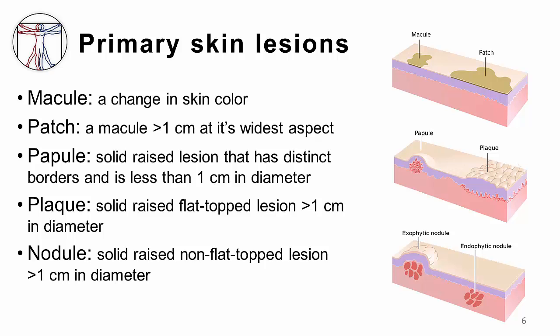A papule is a solid, raised lesion that has distinct borders and is less than one centimeter in diameter. Papules may have a variety of shapes and profiles — they may be domed, flat-topped, or umbilicated, and may be associated with secondary features such as crusts or scales. A papule that is flat-topped and greater than one centimeter in diameter is called a plaque, analogous to the geographical plateau in its shape.